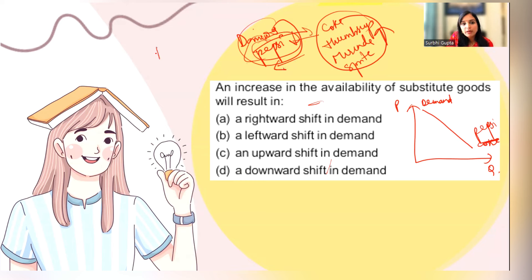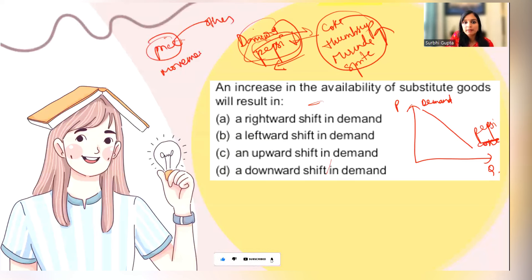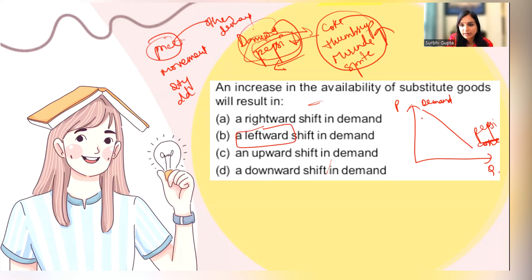Because there is no change in price but a change in other factors, when only own price changes there is movement along the demand curve and quantity demanded changes. But here the demand itself changes, so there will be a shift — and it will be a leftward shift, because demand decreases as substitute goods increase.